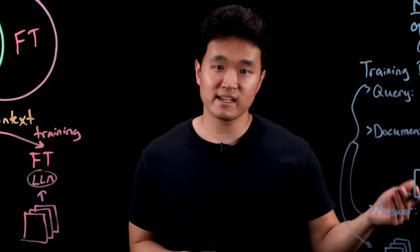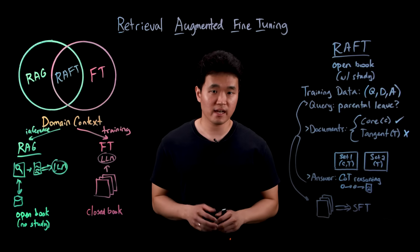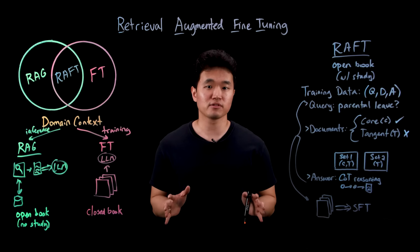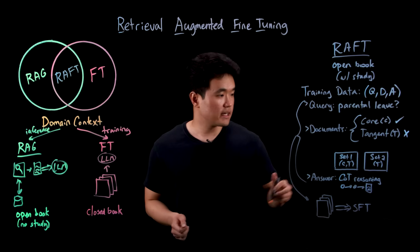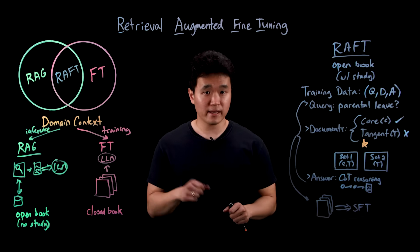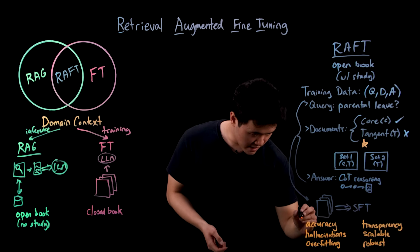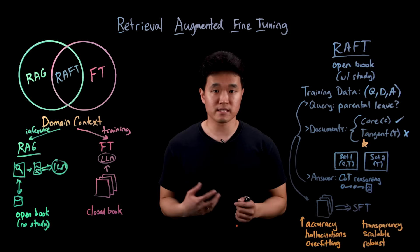And with that, our model is now ready to ace the exam. So there are three aspects of this training process that I want to highlight that are key to making this whole thing work. One, the inclusion of tangent documents helps to teach the model how to pick out relevant documents from irrelevant ones, thus helping to increase accuracy on domain-specific questions.